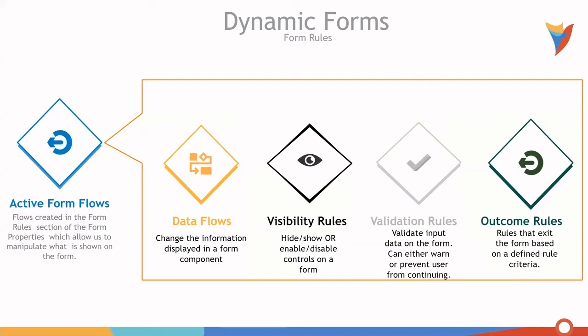These are broken down into a few different components: data flows, which change the information displayed on the form; component visibility rules, which hide, show, enable, or disable controls on the form; validation rules, which can validate input data on the form — they can either warn or prevent a user from continuing; and outcome rules, which exit the form based on a defined rule criteria.